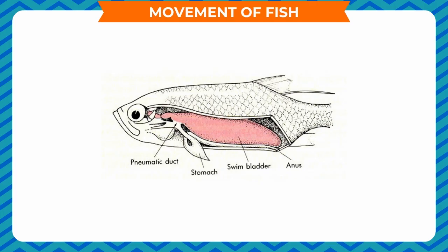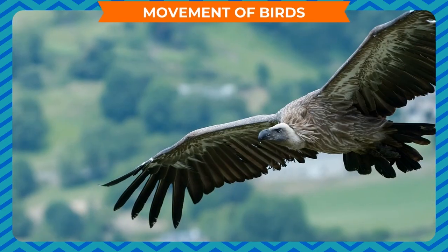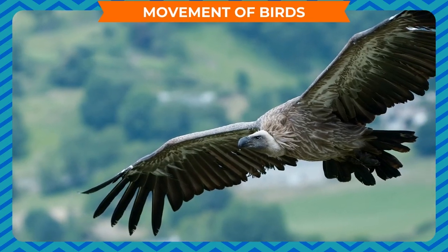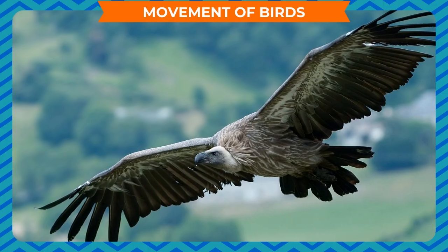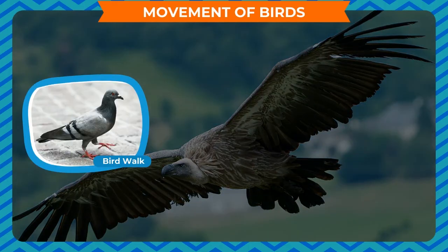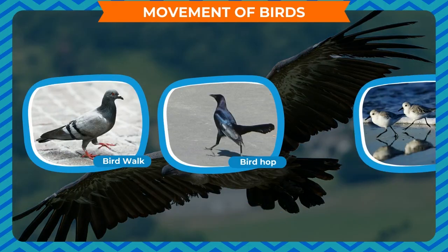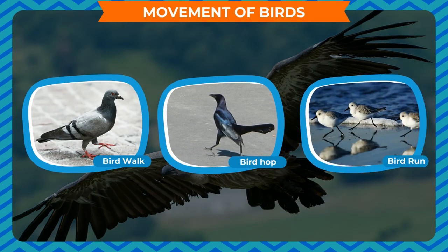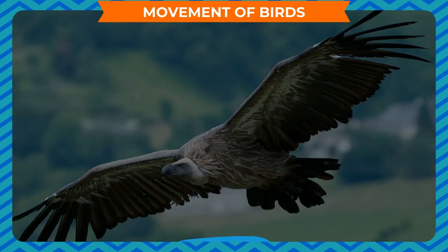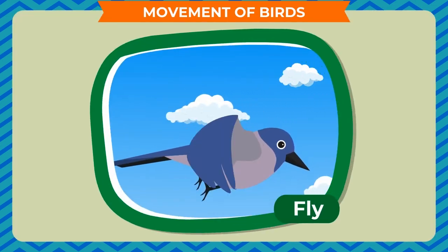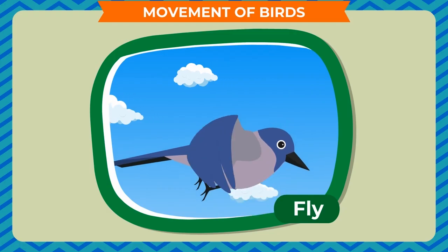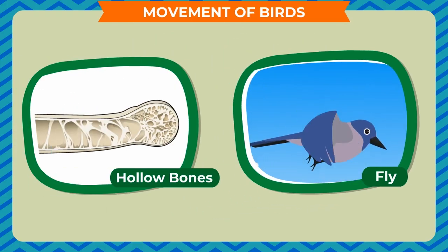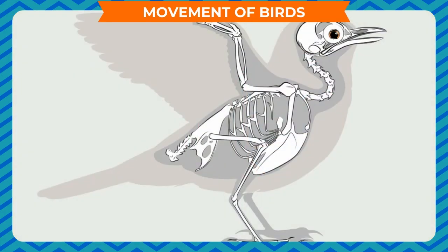Movement of birds: Most birds are capable of flying and can also walk, hop, or run on the ground. They have a streamlined body which makes it easier to fly through air. They have wings and hollow bones which make them lightweight, as well as powerful chest muscles which help them in flapping their wings during flight.